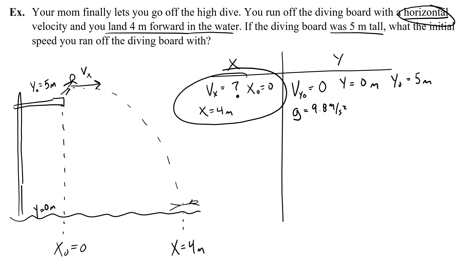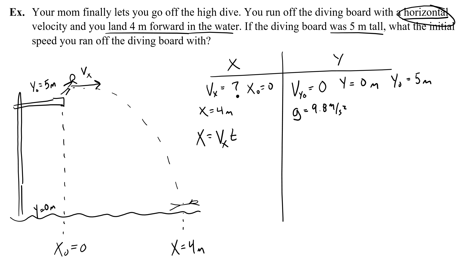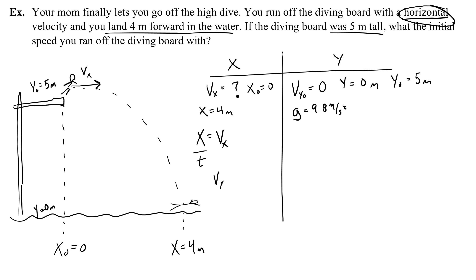Now let's think about the x column. I want to find vx. Using x = vx·t + x_0, and since x_0 = 0, I get vx = x / t = 4 / t. I know x is 4 meters, but I don't know t yet, so I need to go to the y column to find time.